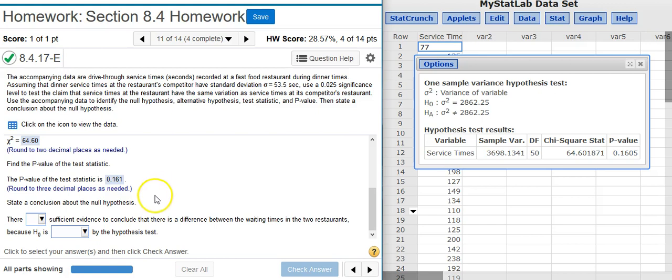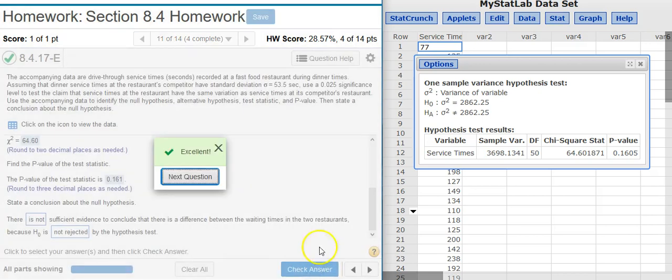And now the last part asks us to state a conclusion about the null hypothesis. Well, our p-value, 16.1%, is definitely greater than the 2.5% significance level we're asked to use for comparison. So therefore, we're outside the region of rejection, and there's not sufficient evidence. Whenever you fail to reject, there's not sufficient evidence. And we're doing this because the null hypothesis is not rejected. We failed to reject. Excellent!